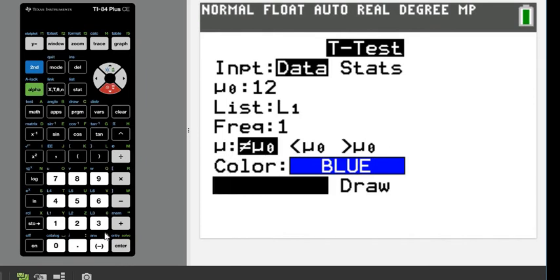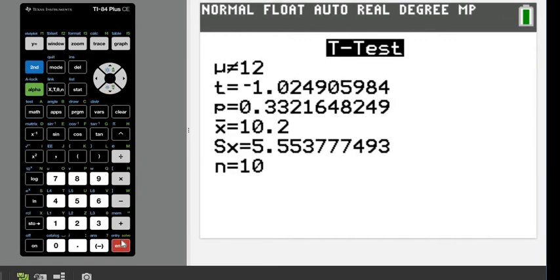So the alternative is always going to tell you the tail of the test, whether you have 2 tail, left tail, or right tail. Alright so I ran the test in here. This does give me the answer to T, which is the standardized test statistic. It gives us our p-value, which is what I am going to use to help us compare and come to our conclusion. It also gives us X bar, which is the sample mean, and the sample standard deviation, as well as the sample size.